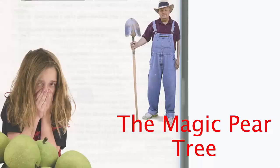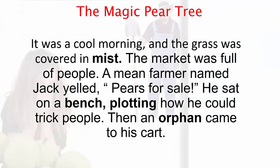The Magic Pear Tree. It was a cool morning and the grass was covered in mist. The market was full of people. A mean farmer named Jack yelled, "Pears for sale!" He sat on a bench, plotting how he could trick people.